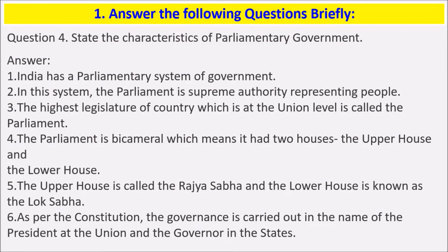Next: state the characteristics of parliamentary government. India has a parliamentary system of government. In this system, Parliament is the supreme authority representing the people. The highest legislature of the country at the union level is called the Parliament. The Parliament is bicameral.